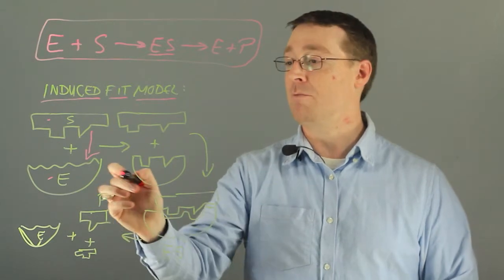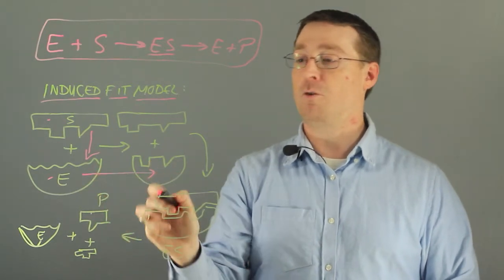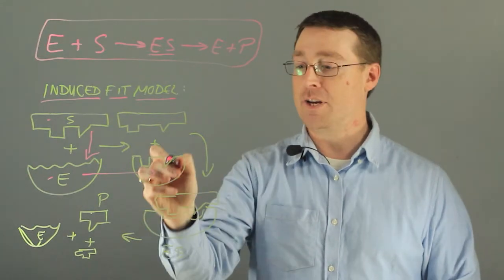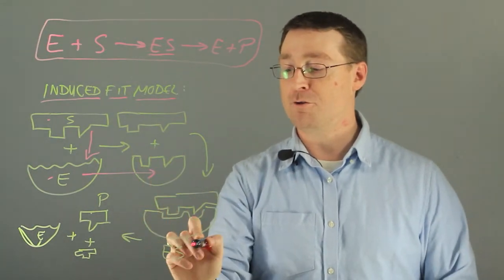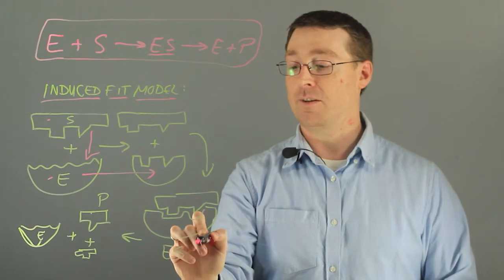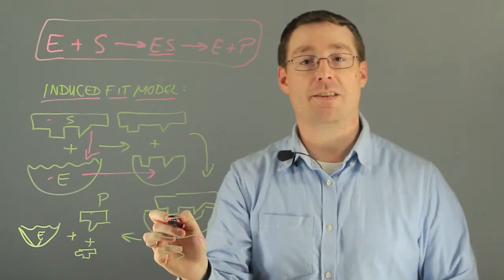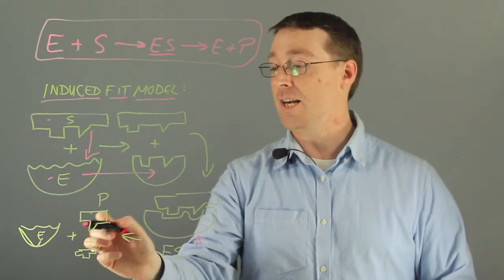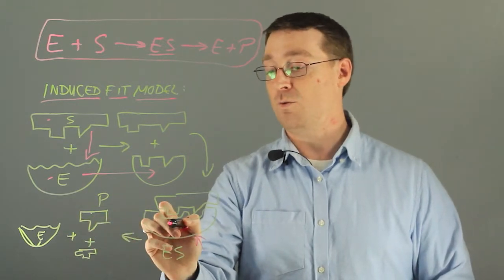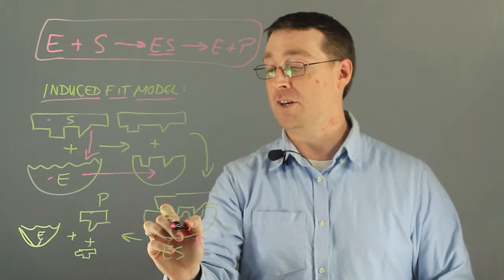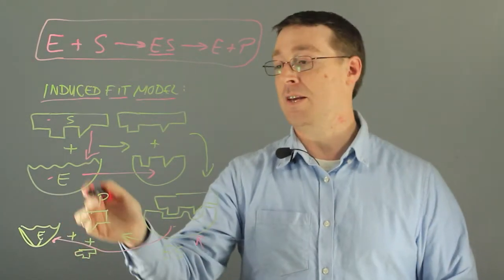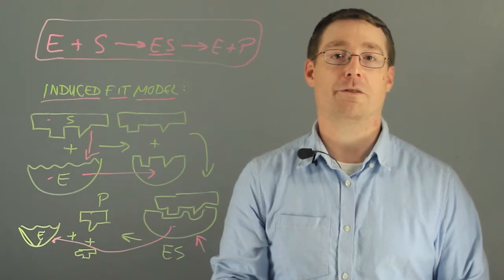This forms the enzyme-substrate complex shown here in order to facilitate the chemistry, releasing the two products and the enzyme. The enzyme, which had this conformation during catalysis, changes back to its original shape and can go through sequential rounds of catalysis.